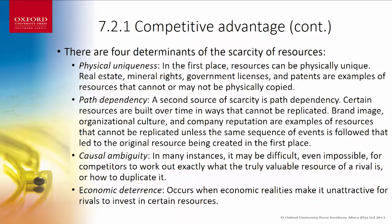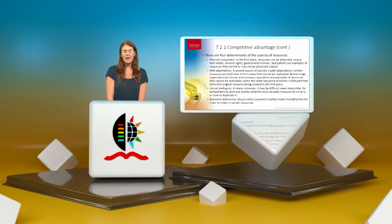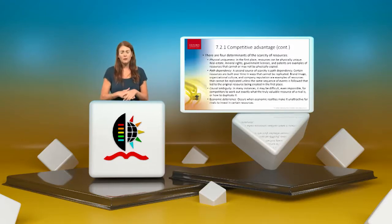Economic deterrence occurs when economic realities make it unattractive for rivals to invest in certain resources. For example, if you live in Cape Town right now, would it be a smart move to invest in a company producing swimming pool products or lawn care — things that need a lot of water — knowing water is a scarcity? Investing in something that doesn't align with economic reality might not be a smart move for your business.